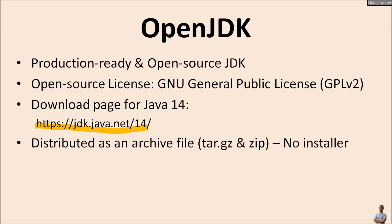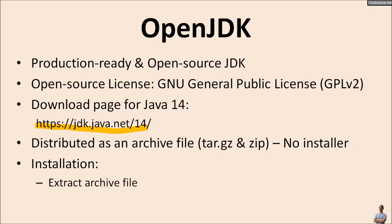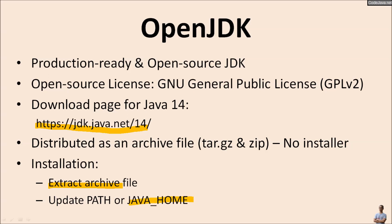Note that OpenJDK is distributed as an archive file without an installer program. To install OpenJDK after downloading, we need to extract the archive file and then update the PATH or JAVA_HOME environment variable.